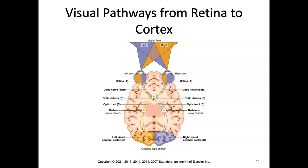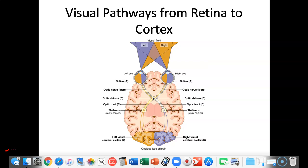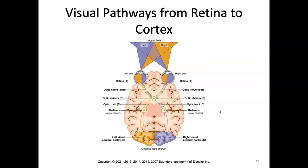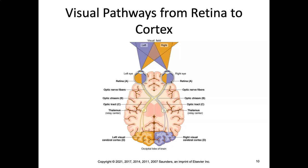The right side of the eye, which sees the left visual field, will move over to the right side of the brain in the right visual cerebral cortex. Notice here you have your thalamus, which is considered your relay center. The cerebral cortex of your brain is in the occipital lobe — that's important knowledge to have.